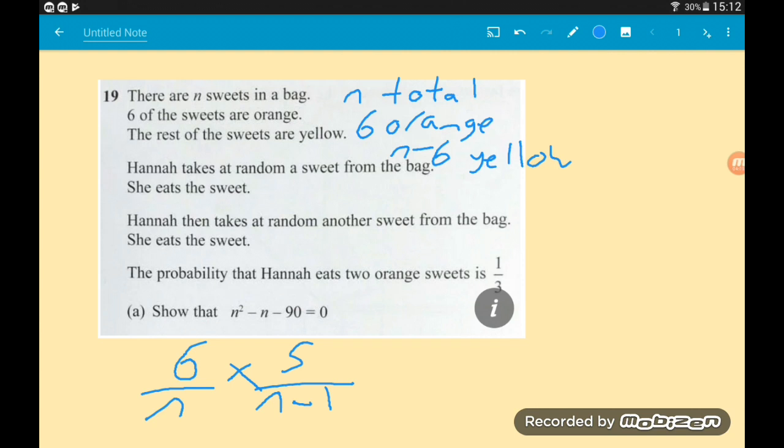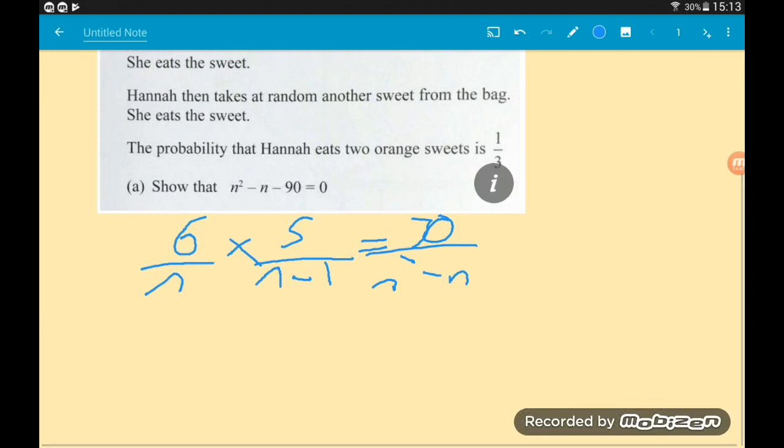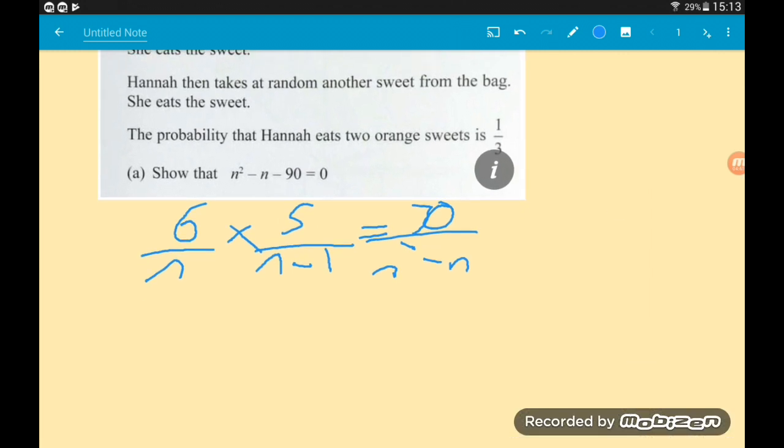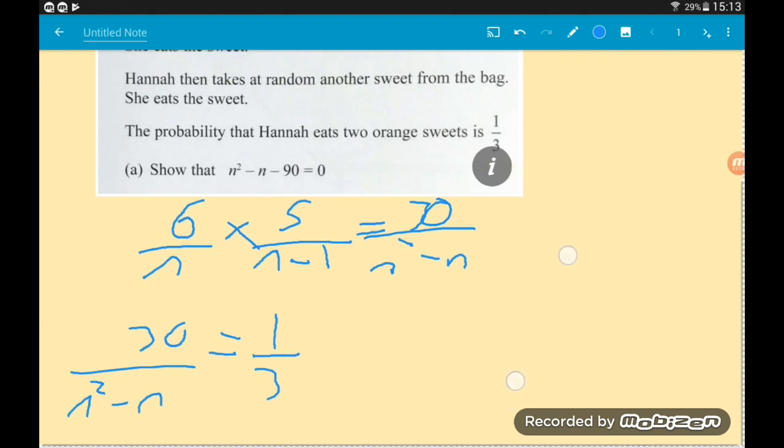Let's multiply these two fractions and see what we get. Up on top, six times five is 30. On the bottom, n times n minus one is n squared minus n. At that point we might be a little bit happier because we've got an n squared minus n. Now remember, what we've done there, we've worked out the algebraic probability of picking two orange sweets. We know the numeric probability is one third. So we can set 30 over n squared minus n equal to one third. All we're saying is the probability of getting two orange sweets equals the probability of getting two orange sweets.